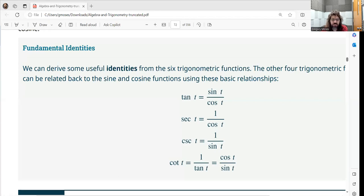This is how the tangent, secant, cosecant, and cotangent were defined in terms of the sine and the cosine.